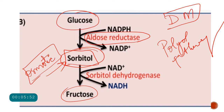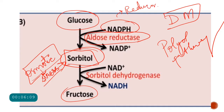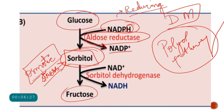With the polyol pathway, not only does this osmotic agent accumulate causing osmotic stress and cellular dehydration, but the NADPH — the reducing power of the body that handles oxidative damage — is also consumed. The aldose reductase uses NADPH, converting it into NADP⁺. This is why the polyol pathway is a toxic pathway occurring in diabetes mellitus.